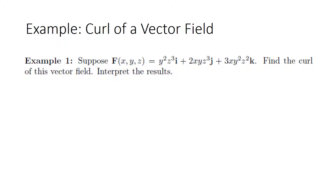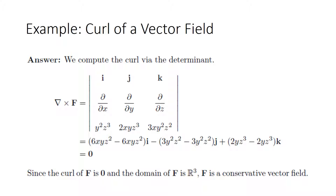Our first example of computing the curl of a vector field: suppose that f is a given vector-valued function, and we are going to find the curl and interpret the results. We compute the curl via the determinant — the del cross f operation — and expand the determinant. The result of del cross f, the curl of f, is zero for any value of x, y, and z in R3. This implies that f is a conservative vector field, so we can expect no rotations at any points in this field.